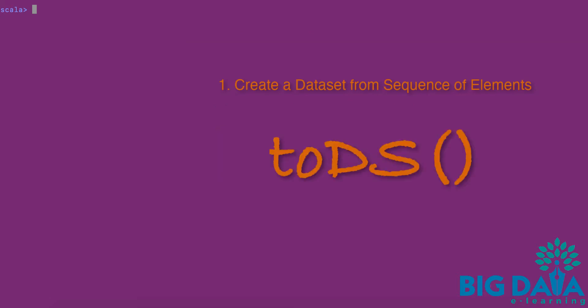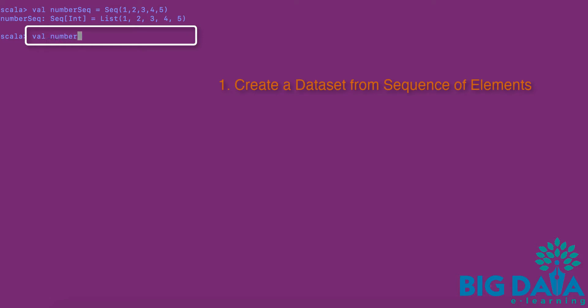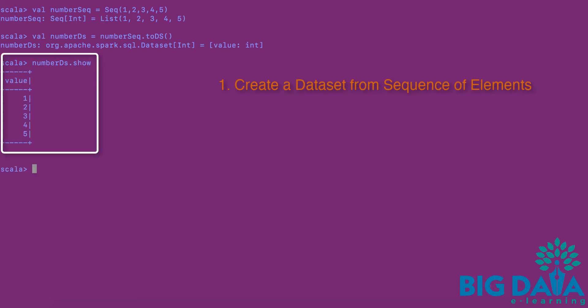Method 1: Create a dataset from a sequence of elements. A dataset can be created from a sequence of elements using the toDS method. For example, let's say we have a number sequence variable containing elements 1 to 5. I am applying the toDS method on the number sequence. This should give us a dataset. Let's check if the dataset is created by issuing a Show action on the dataset. Here we can see that the dataset has been created successfully.